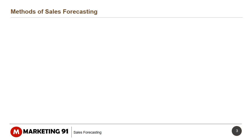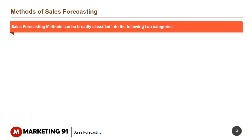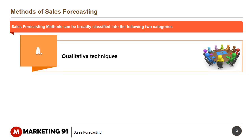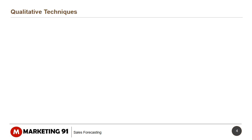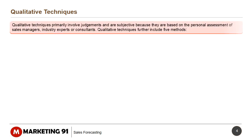Methods of Sales Forecasting: Sales forecasting methods can be broadly classified into two categories — qualitative techniques and quantitative techniques. Qualitative techniques primarily involve judgments and are subjective because they are based on the personal assessment of sales managers, industry experts, or consultants. Qualitative techniques further include five methods.